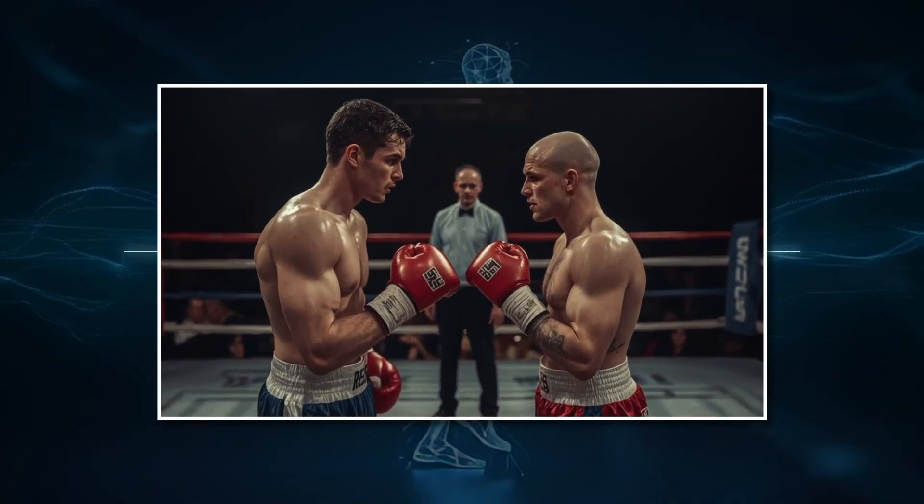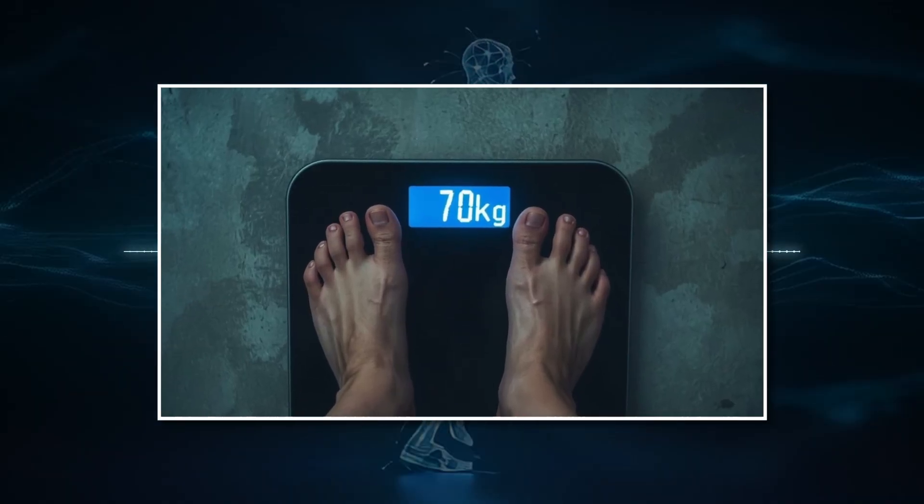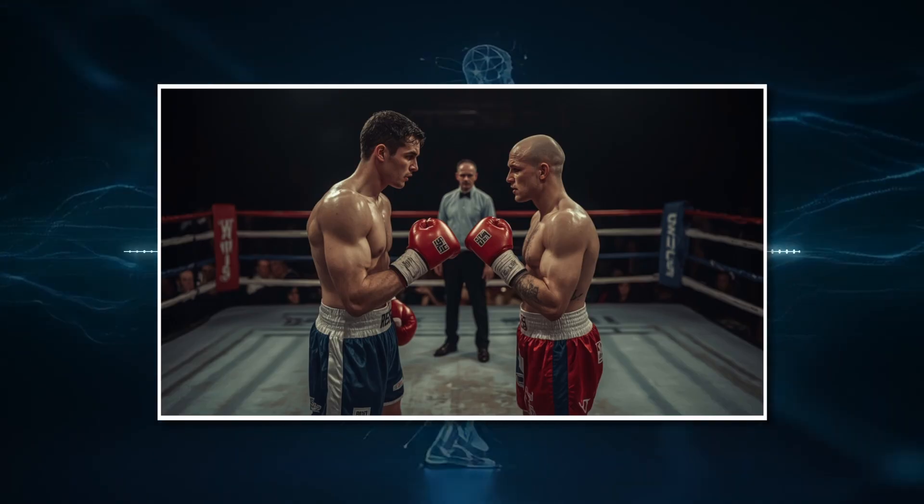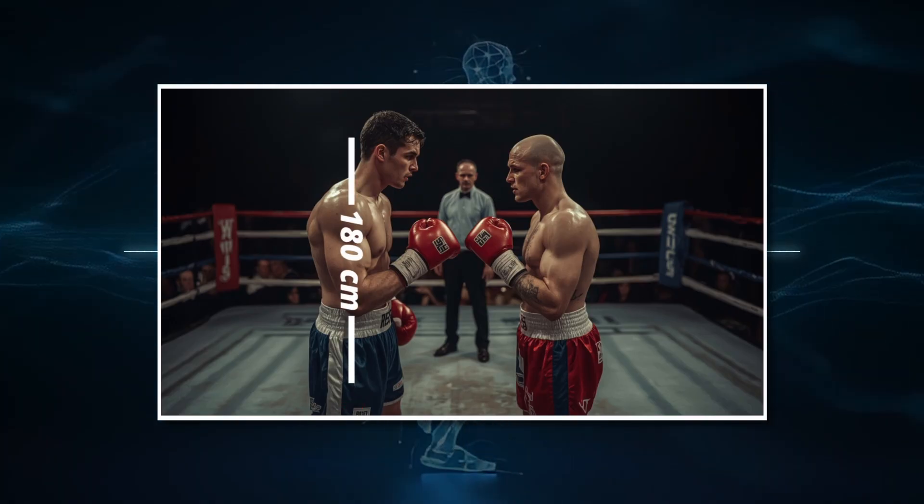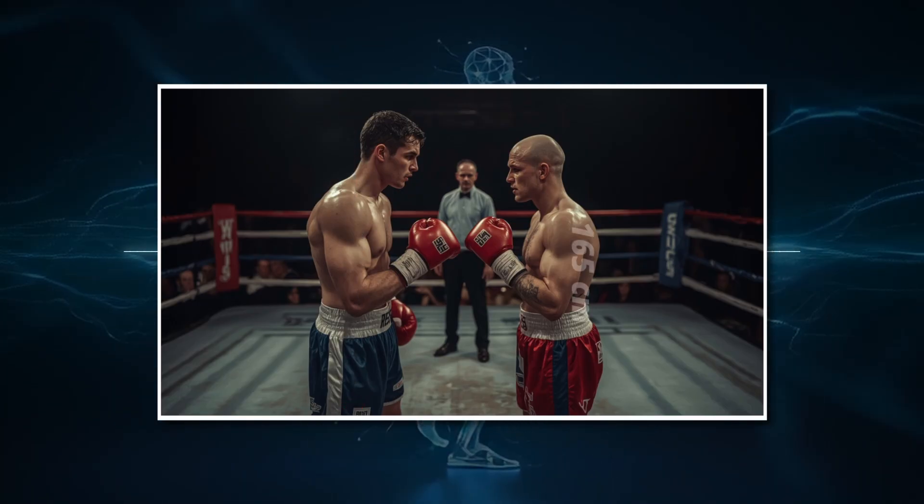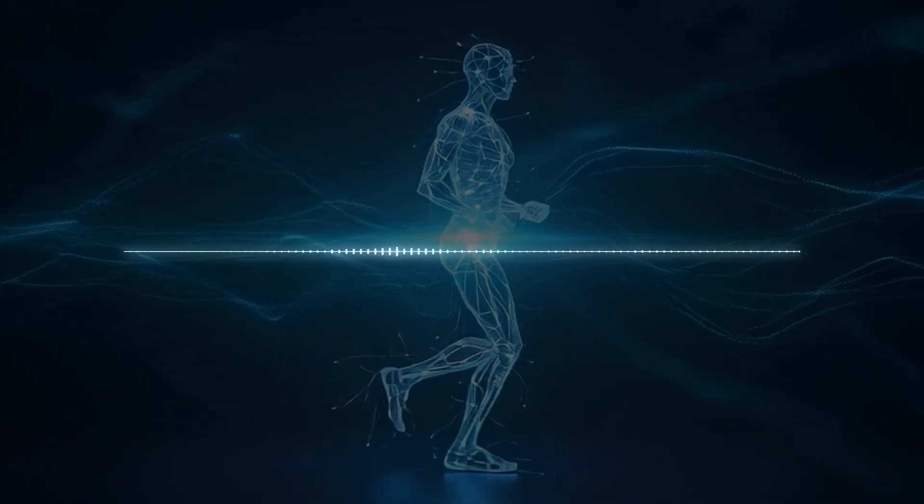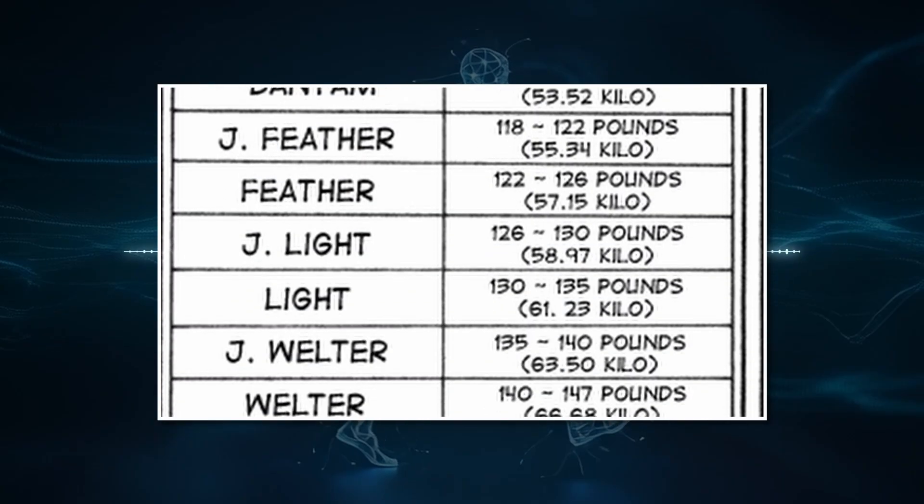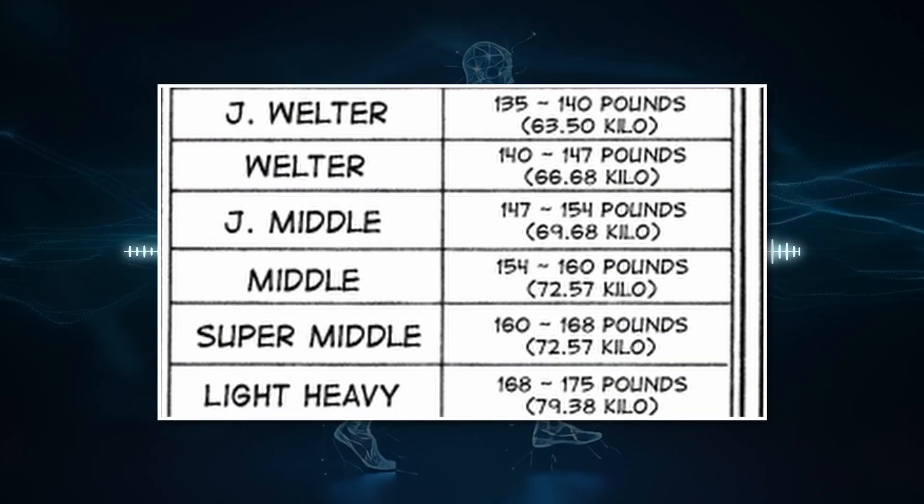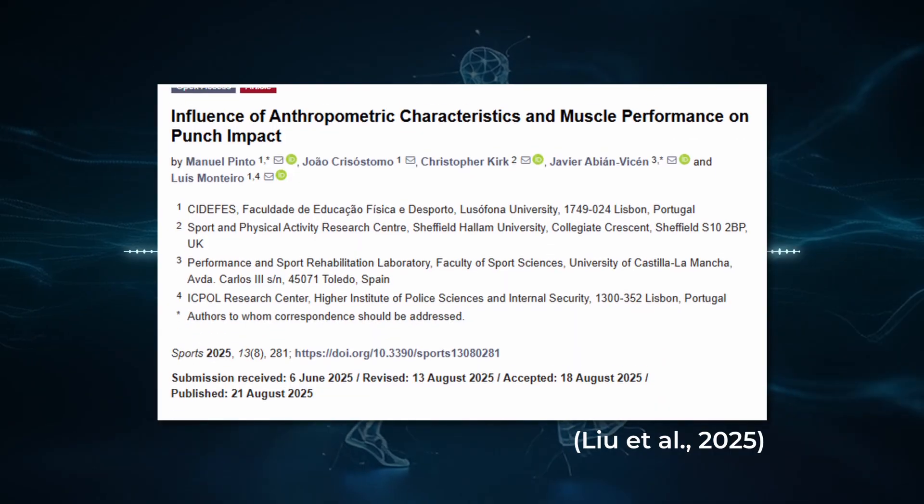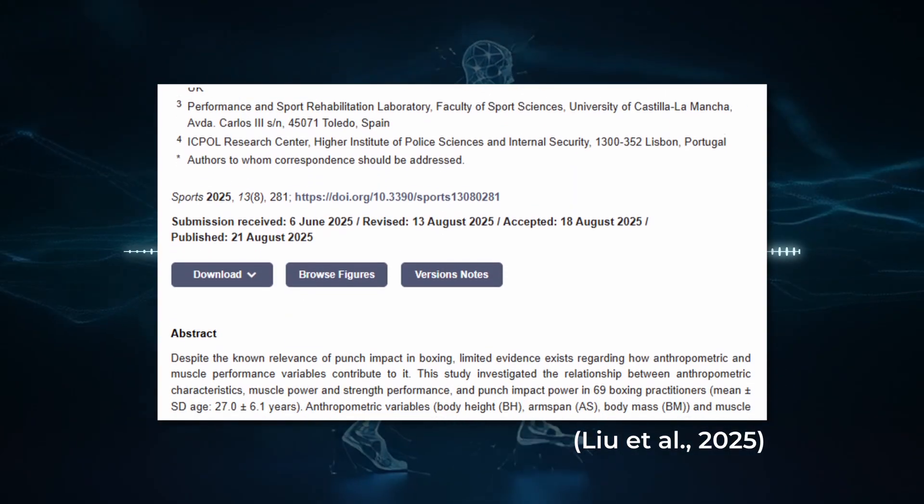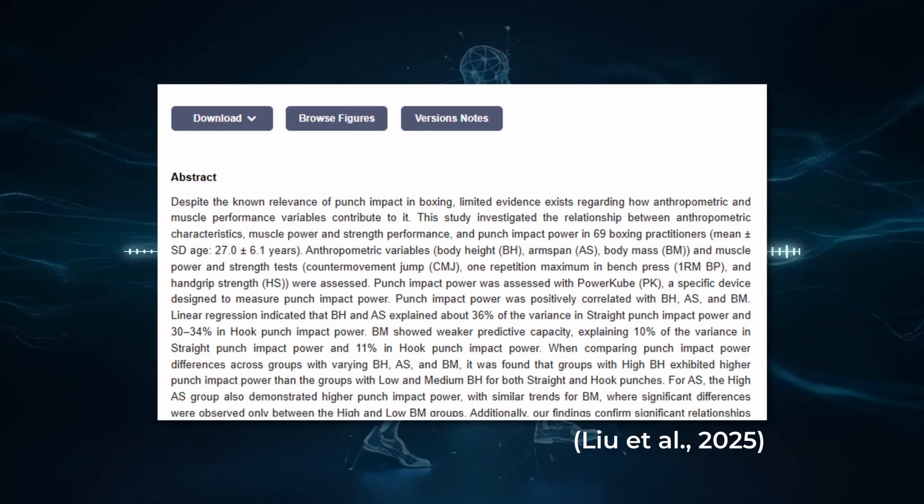Two middleweights step into the ring. Both weigh exactly 70kg. One's tall and lanky at 180cm. The other's compact and muscular at 165cm. Traditional boxing wisdom says they should hit with similar power. After all, they're in the same weight class.